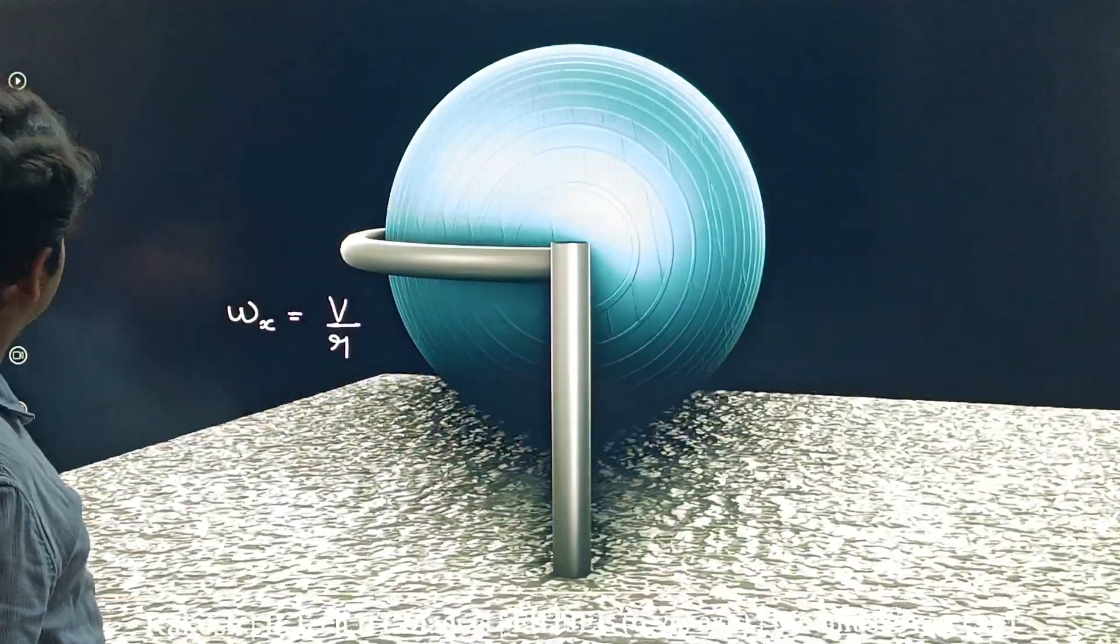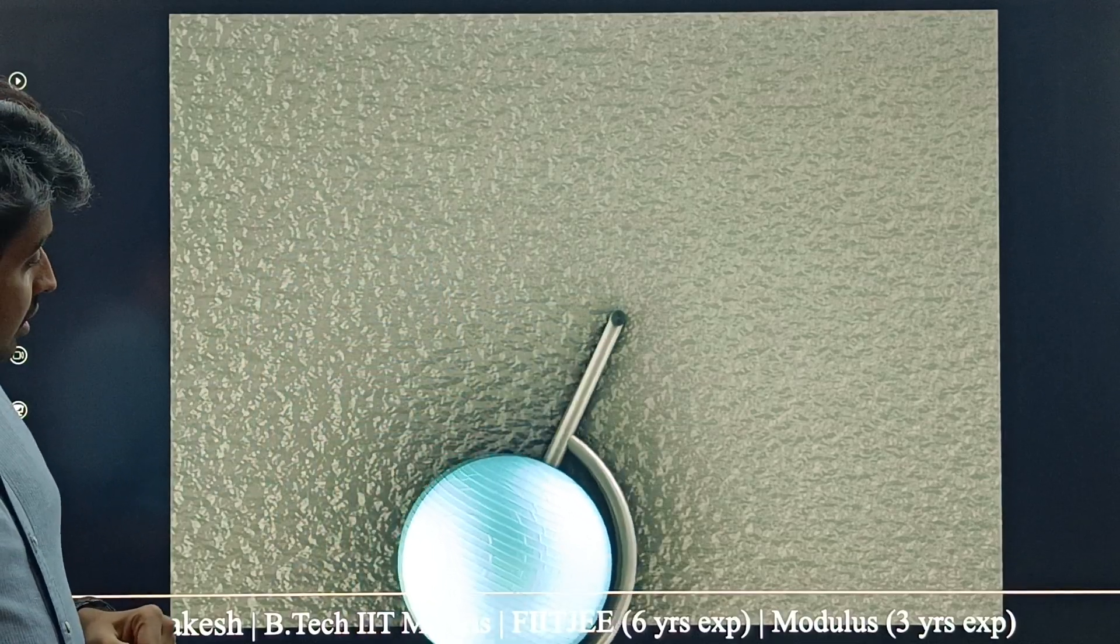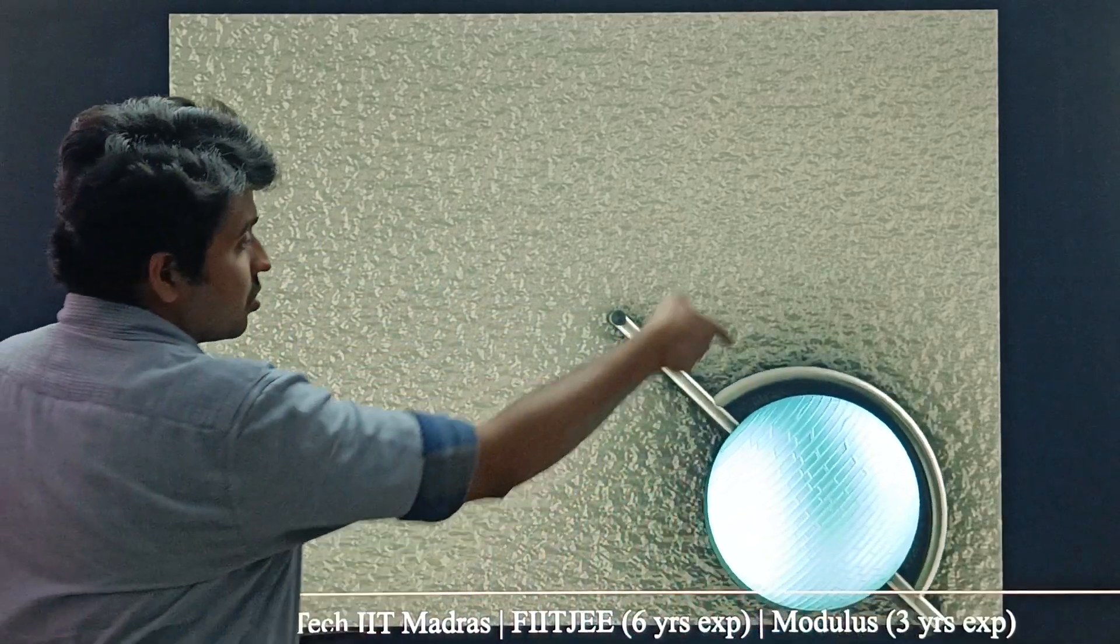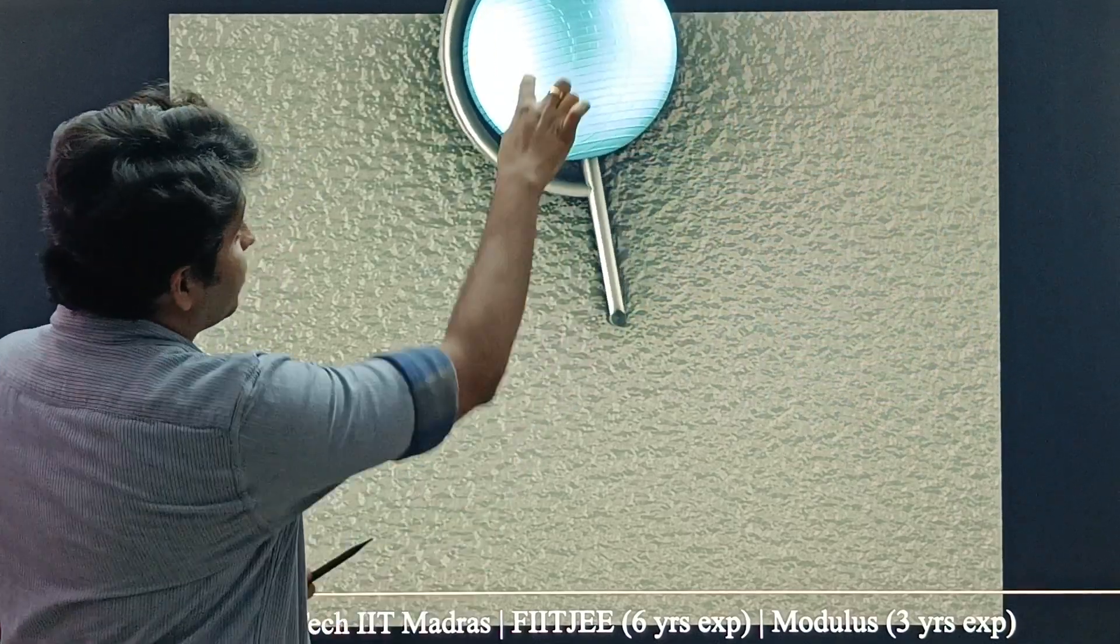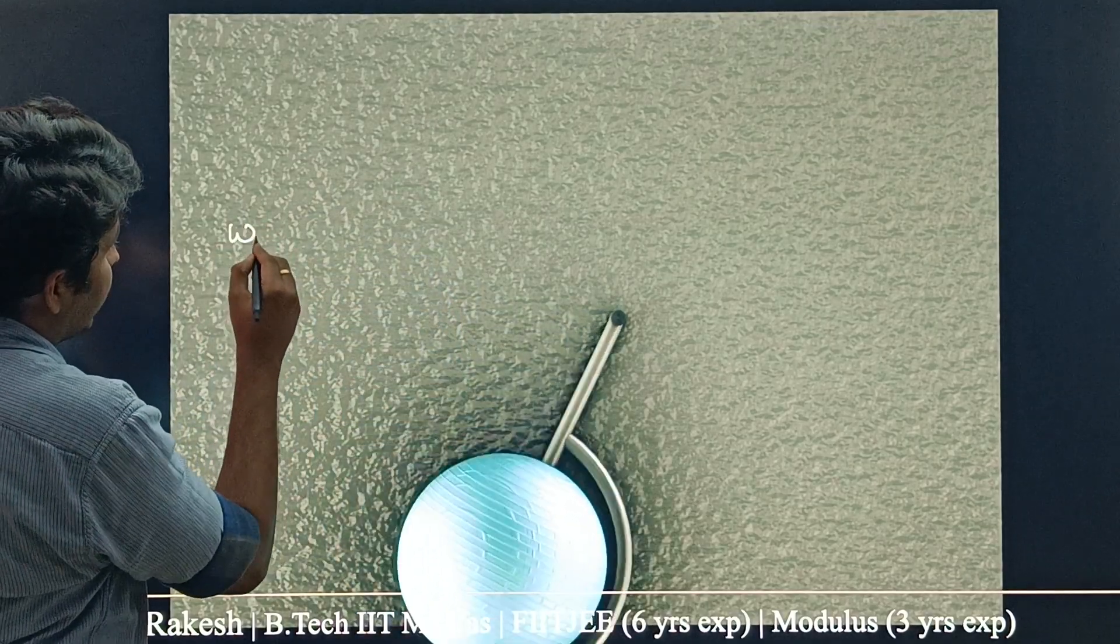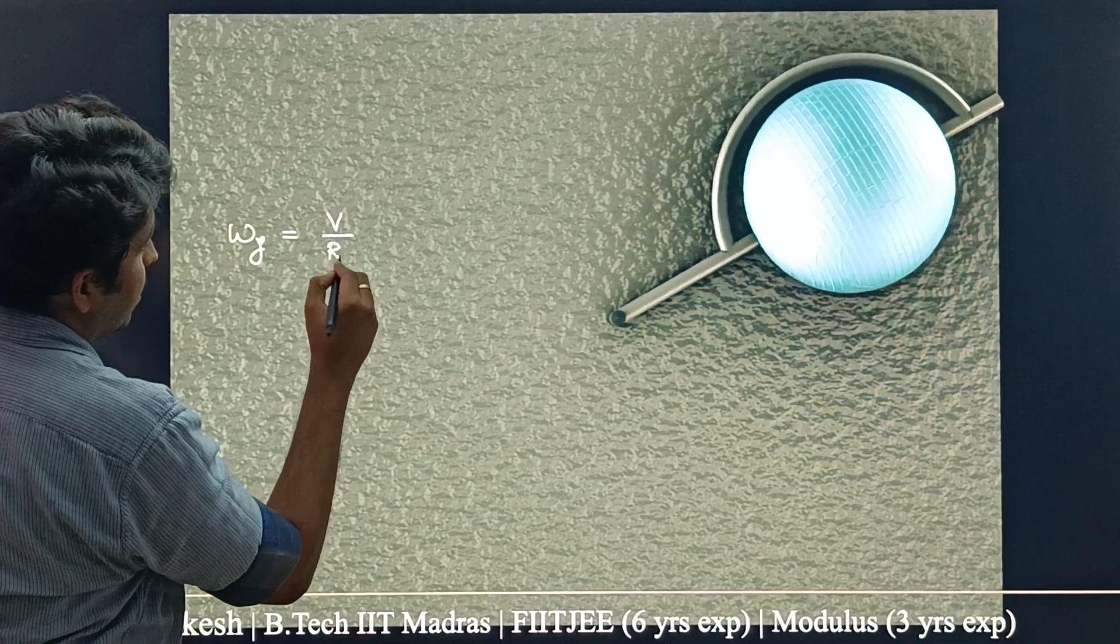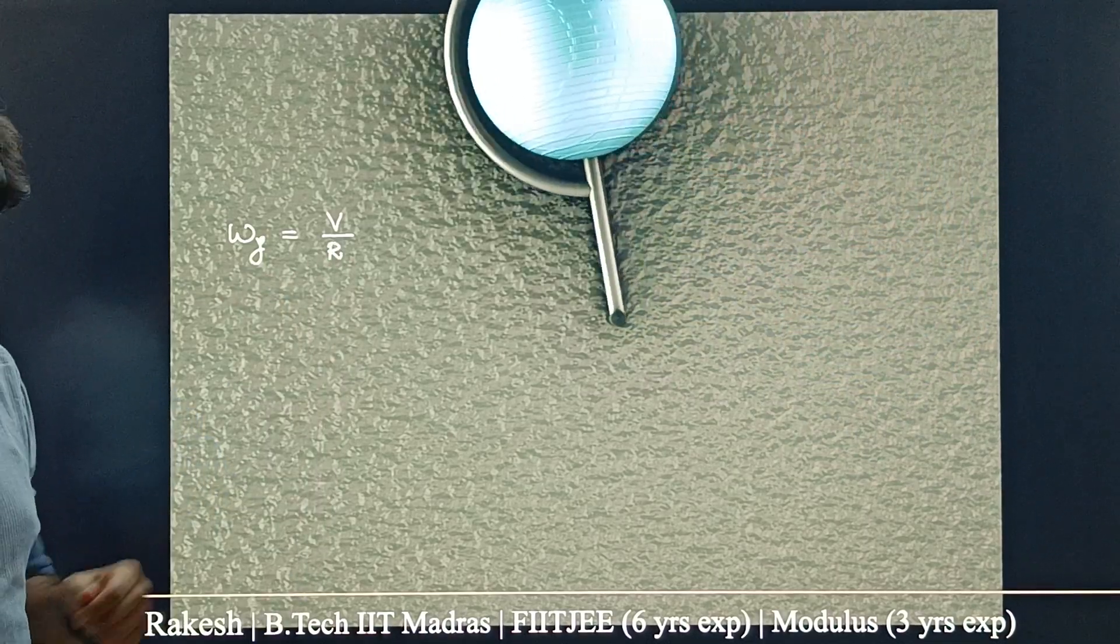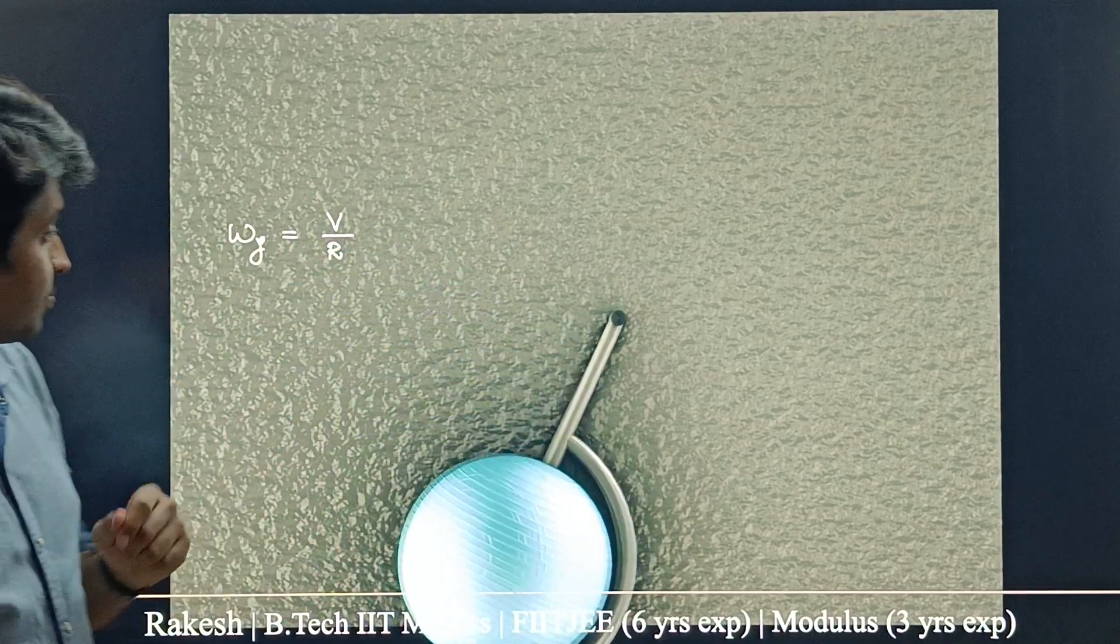Next. You know this slot is rotating like this. Omega y is in this direction. If this is V, this is radius capital R. Omega y equal to V by capital R. We have got omega x and we have got omega y.